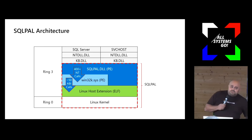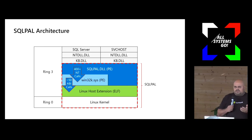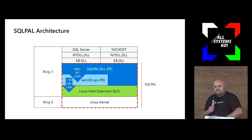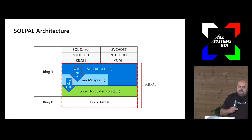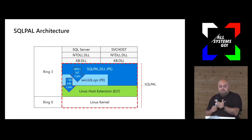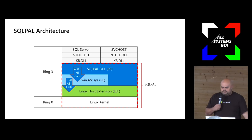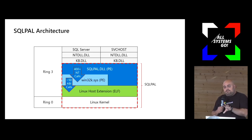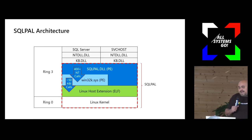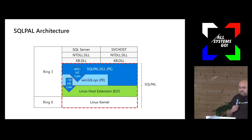SQL Pal makes about 400 NT calls down to Win32kSys, which is another PE executable running within Linux. From there, about 50 calls make it down to the Linux host extension, which is an ELF executable. We also built support for persistent memory on Linux - sticks of RAM that persist your data. With persistent memory you can avoid the entire OS stack for I/O and keep it in user mode, performing mem copy operations with extremely low latency.